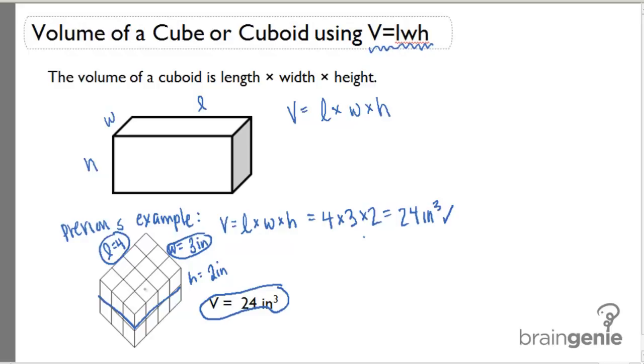Then if we take that area and multiply it by the number of rows, or the height, we can get the volume of the entire cuboid. So therefore we're going to use this formula to find the volume of cuboids.